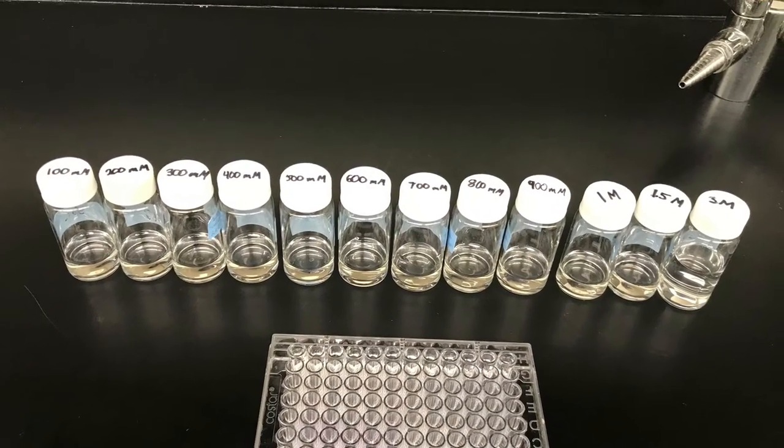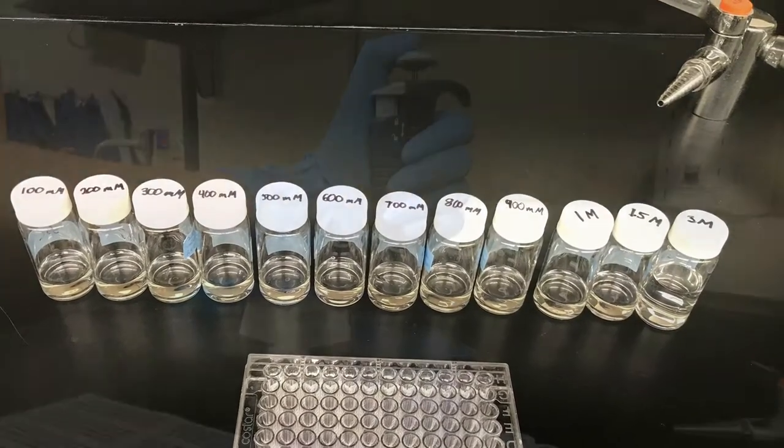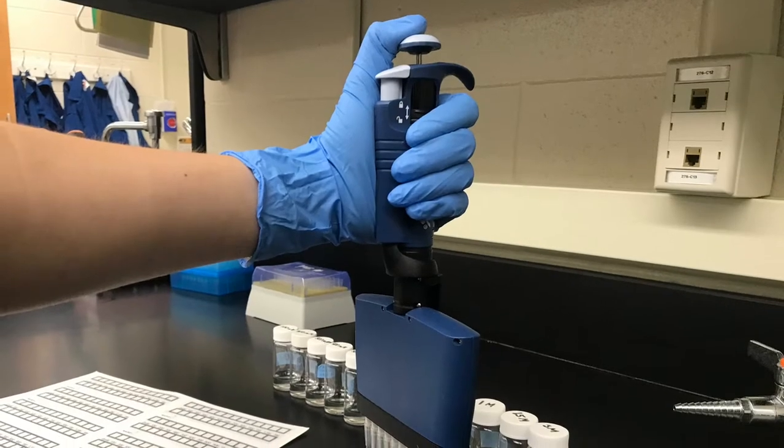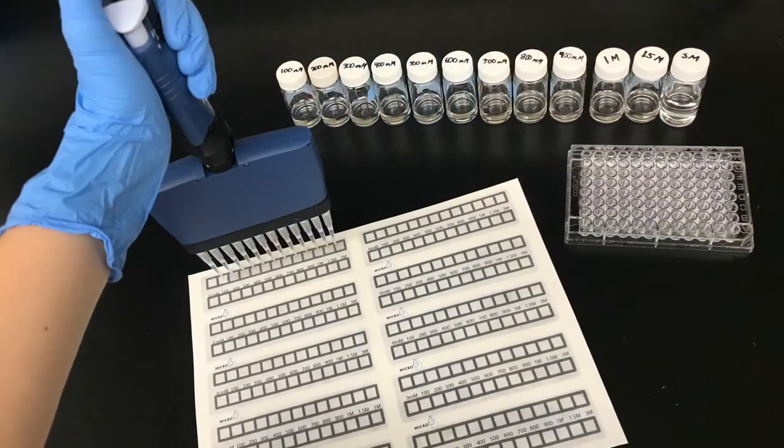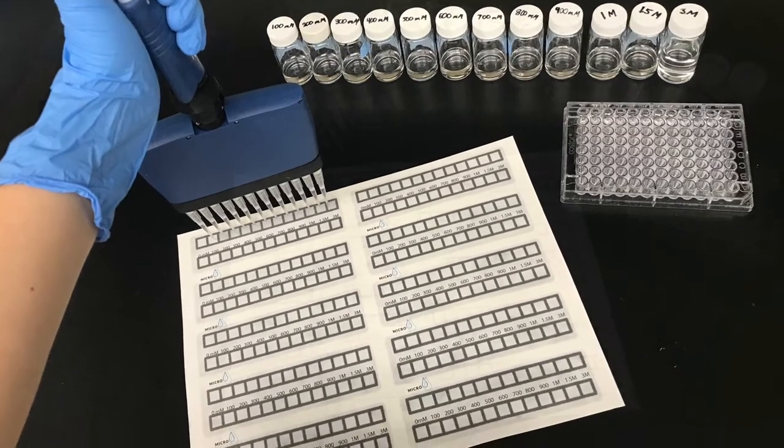Fill one row of a 96-well plate with the reagents in order. Use a 12-channel pipette to transfer 5 microliters of the reagents from the 96-well plate to the paper titrator.